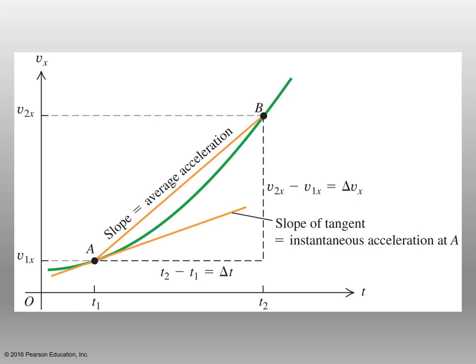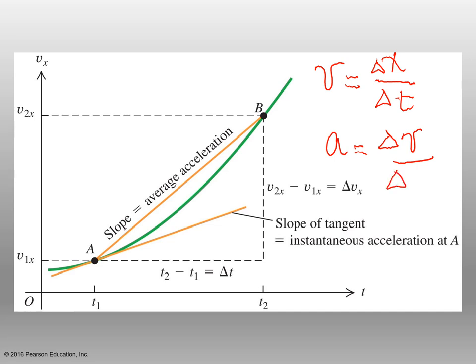This is another slide showing the same concept, only we're dealing with acceleration. Whereas velocity equals the change in displacement with respect to the change in time, acceleration equals the change in velocity with respect to the change in time. A tangent line to the acceleration curve gives you the instantaneous acceleration at point A.